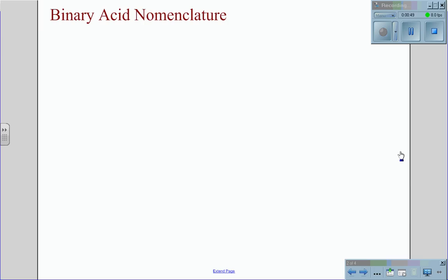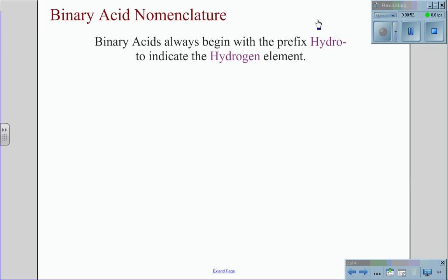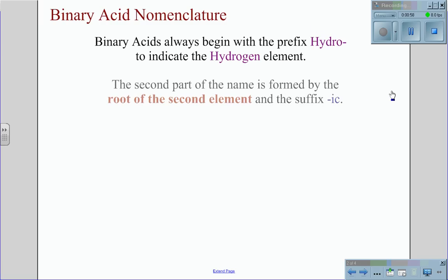For binary acid nomenclature, binary acids always begin with the prefix hydro to indicate the hydrogen element. The second part of the name is formed by the root of the second element and the suffix ic.